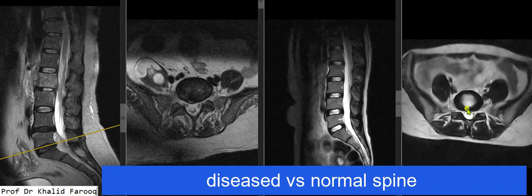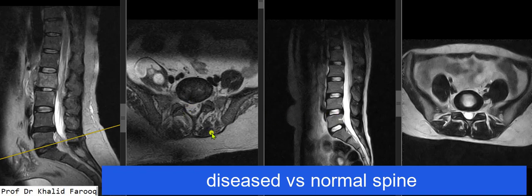So we have compared the normal height and hydration pattern of the discs with degenerative disc desiccation and dehydration. We have also seen an example of a radial tear in the annulus fibrosis, which can lead to chemical neuritis and pain.